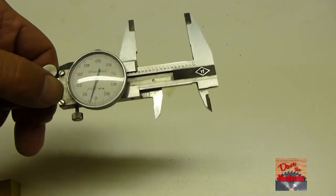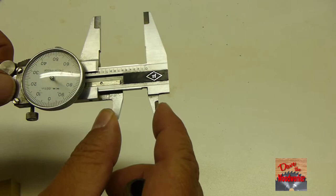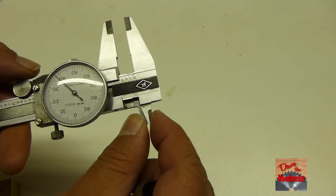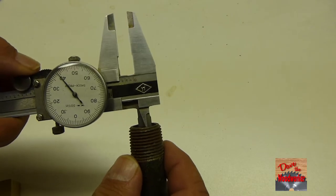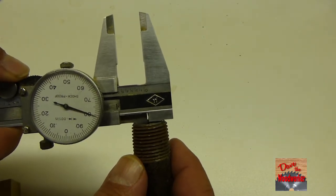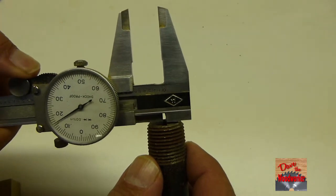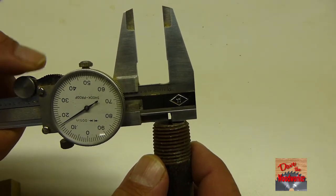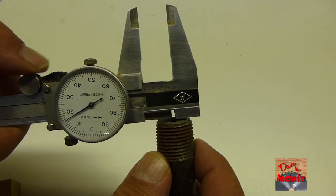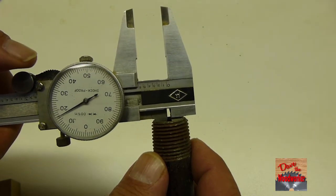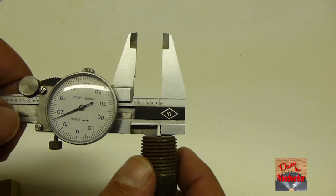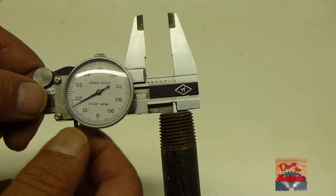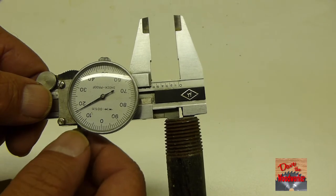To measure the inside diameter, we're going to use the other end here, this end right here. And we've got to move it in, and then you move it out until it touches. When it stops, use the little roller wheel. When it stops, that's it. And you can lock it in place here by this little thumb screw.